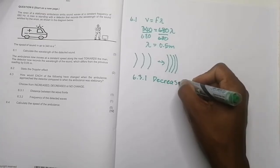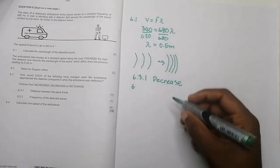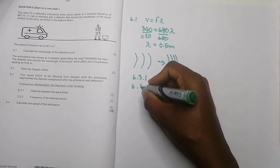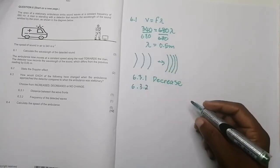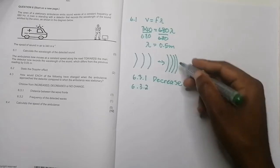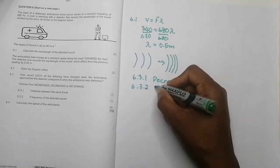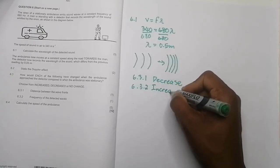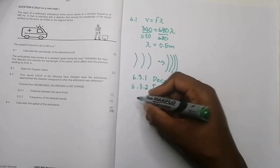For 6.3.2 — the frequency of the detected waves: since the ambulance is approaching, we expect a higher pitch, meaning more waves hitting us per second. So in this case the frequency would increase.